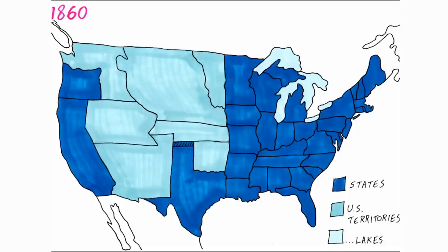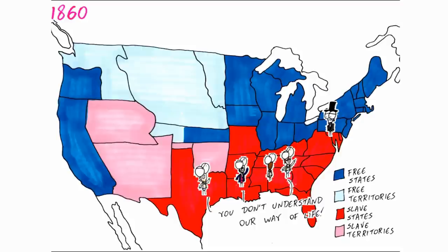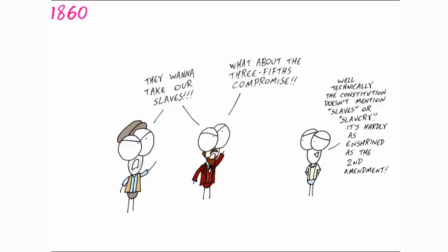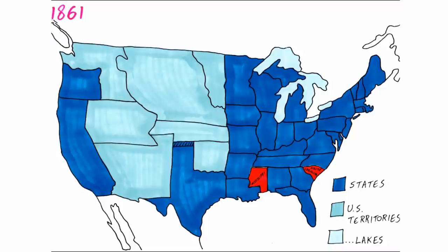The presidential election of 1860 saw the rise of Republican Party candidate Abraham Lincoln, who proposed banning slavery in all the American territories to stop it spreading. People in the South saw this as a move towards the eventual abolition of slavery in all the states, thinking this was against their constitutional rights and increasingly didn't like the northern states making decisions that would affect the very different South.